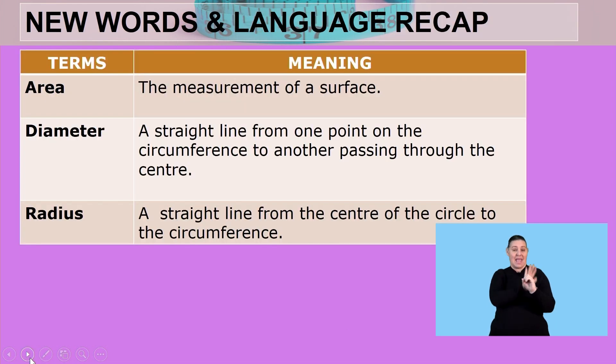Then, the terms I spoke about: area is a measurement of a surface. Diameter, a straight line from one point on the circumference to another passing through the center, that's for circles. You've got a radius, a straight line from the center of the circle to the circumference of the circle.